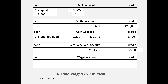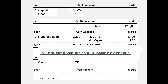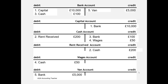Transaction 4: wages account debited £50, cash account credited £50. Transaction 5: van account debited £5,000, bank account credited £5,000 — each entry logs where the other half is. One final check: we add up all the debits and all the credits. If the two totals are the same, then for every debit there is a credit. It doesn't guarantee everything is in the right account, but it confirms the double entry is correct. Each side adds up to £15,350.